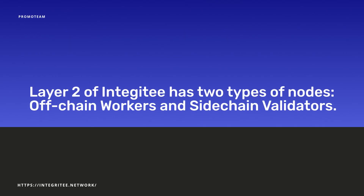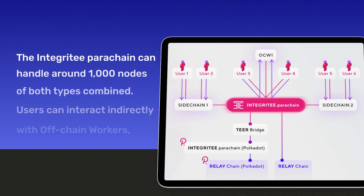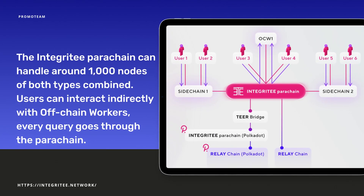Layer 2 of Integrity has two types of nodes: offchain workers and sidechain validators. Both can securely run different types of blockchain software, decentralized applications, or blockchains inside their TEE — we'll explain this later. The Integrity parachain can handle around 1000 nodes of both types combined.